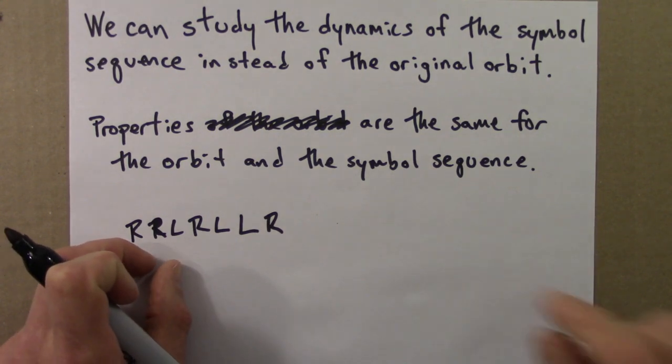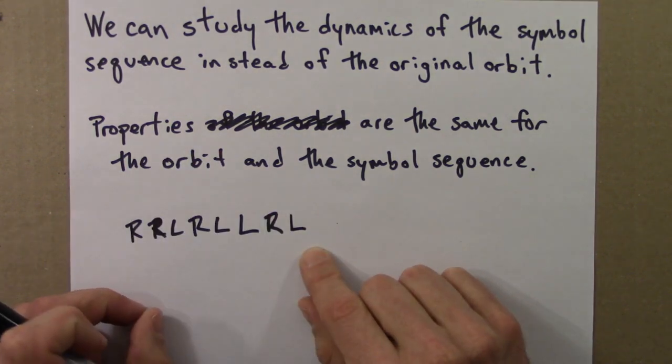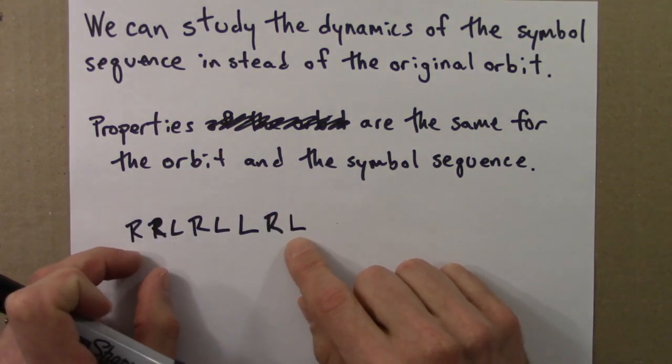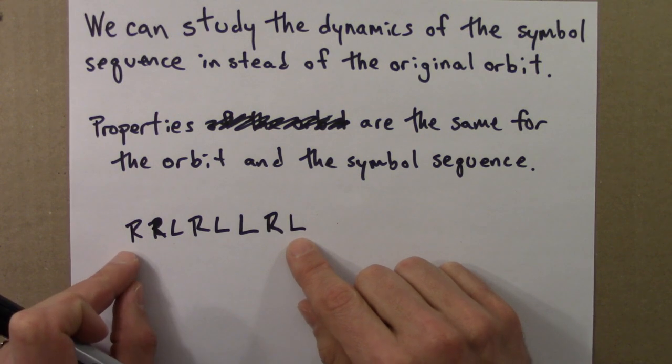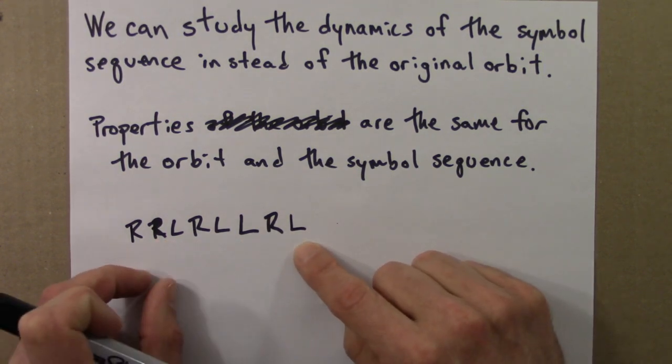Then I could say, well, okay, what if the sequence was, say, this? And then you could show that the possible initial conditions that would have given rise to an orbit whose symbol sequence is this would be smaller still.